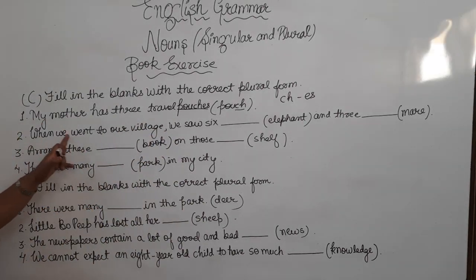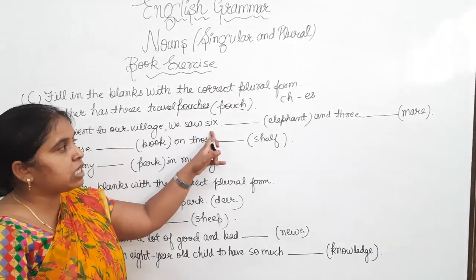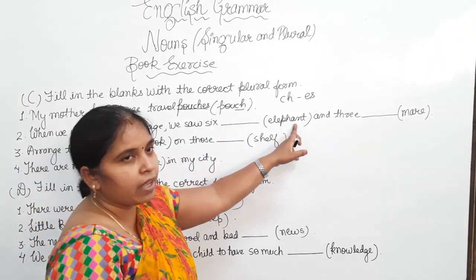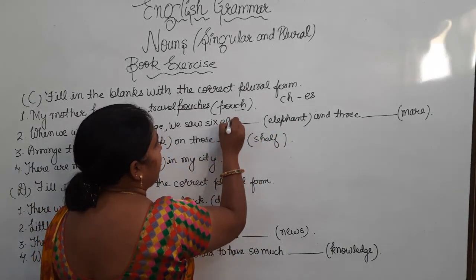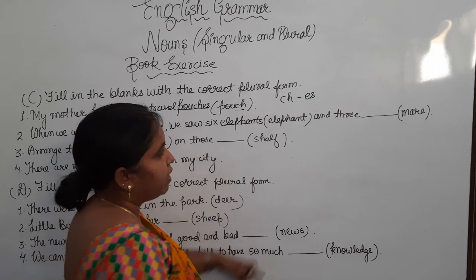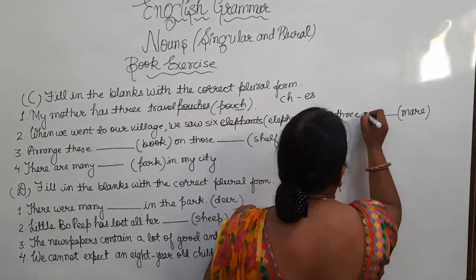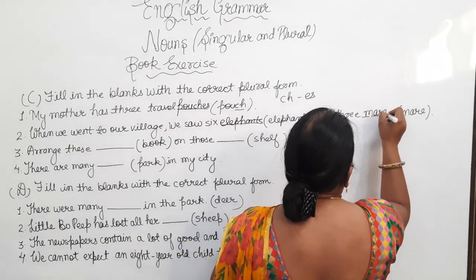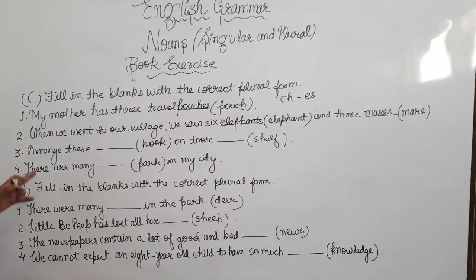Now, next sentence, when we went to our village, we saw six elephants, E-L-E-P-H-A-N-T-S, elephants, and three mares, M-A-R-E-S, mares.